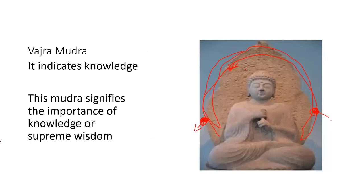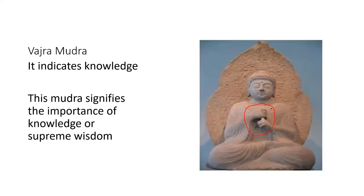The next is Vajra Mudra. In Vajra Mudra, the left hand thumb is completely surrounded by the right hand. This mudra indicates knowledge or wisdom.